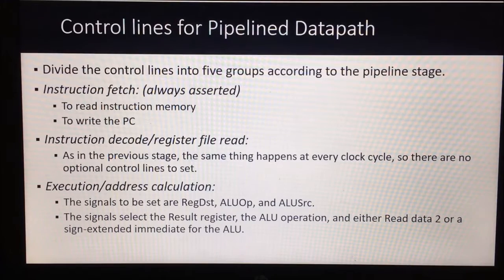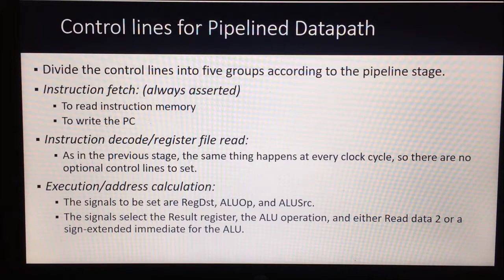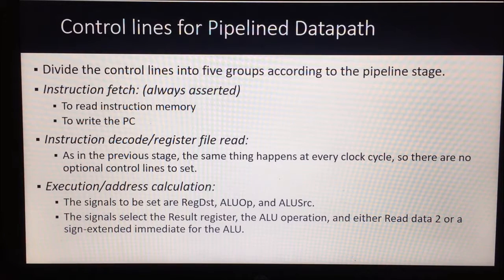There are no control signals included in any of these figures so far. Now we are going to include the control signals for each and every level. These control signals are divided into five groups based on the different stages of the pipeline. For the instruction fetch stage, the instruction memory read and PC write will always be asserted since the pipeline stage is always active, so separate control signals are not required.